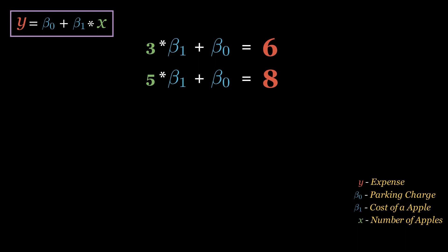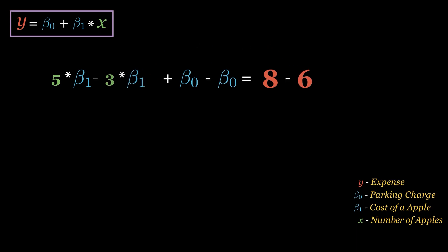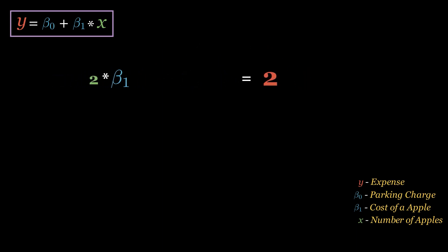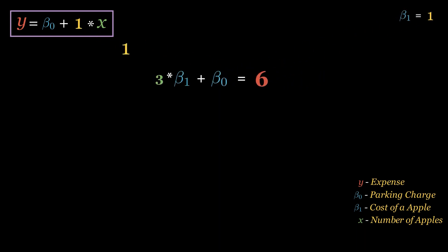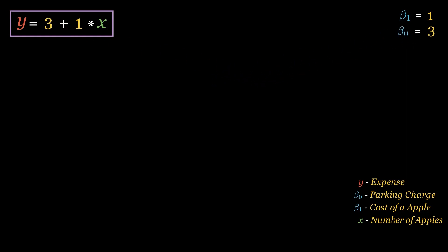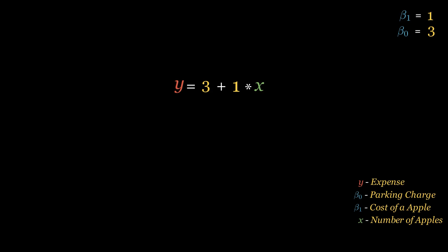Let's solve it. If you subtract the first equation from the second equation, you can calculate the value of beta one, which comes as 1. Now if you take this value of beta one and substitute it in equation number one, you can compute beta zero, which comes as 3. So the final equation is y equals 3 plus 1 multiplied with x.